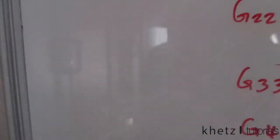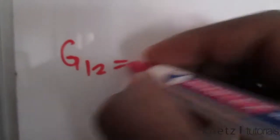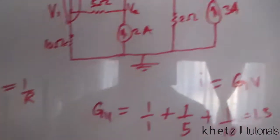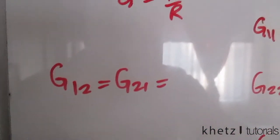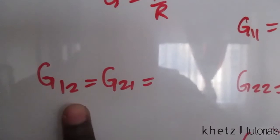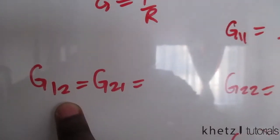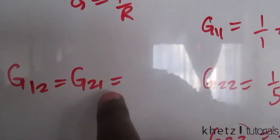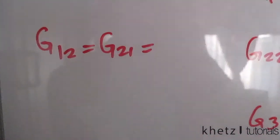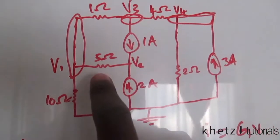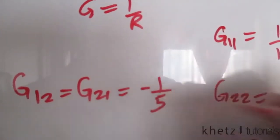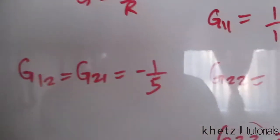Now for the off-diagonal terms. G_12 equals G_21 — this is the sum of conductances between nodes 1 and 2, with a negative sign applied per the inspection rule. Between nodes 1 and 2 we have a 5-ohm resistor, so G_12 = −1/5 = −0.2.